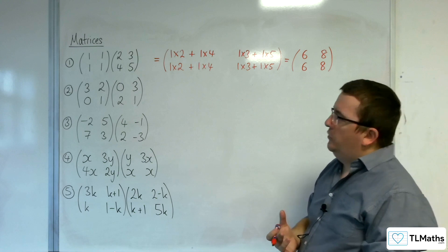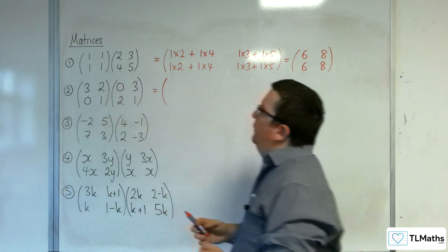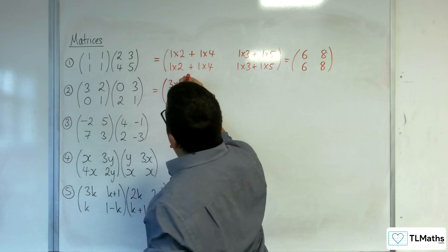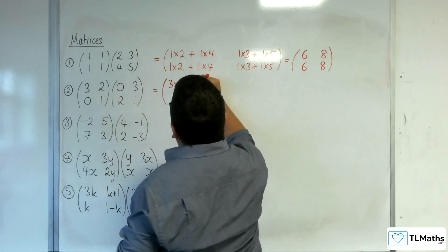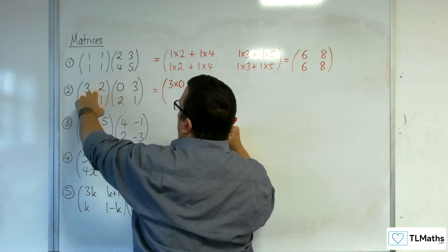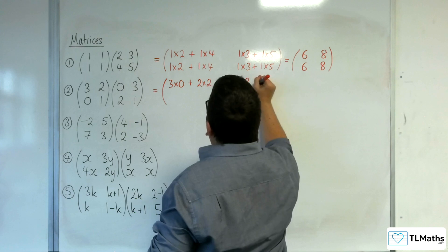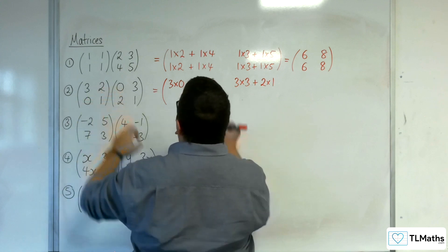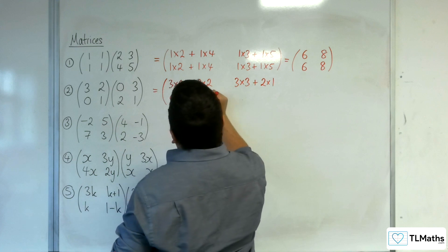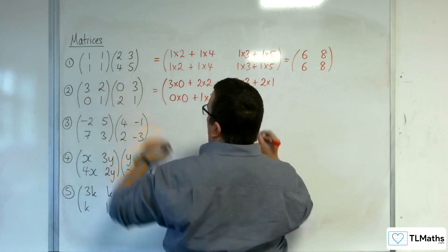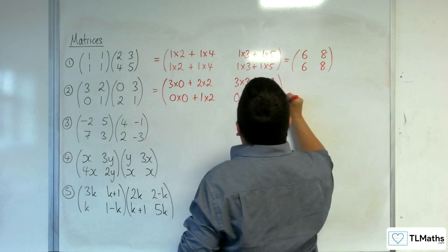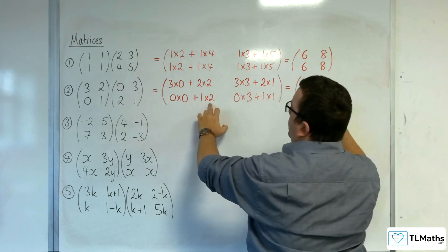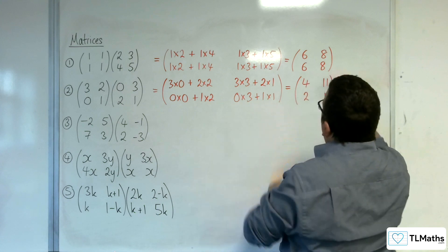Let's have a look at the second one. First of all, you've got the top row multiplying with the first column: 3 times 0 plus 2 times 2. Then you've got the top row multiplying with the second column: 3 times 3 and 2 times 1. Then the bottom row multiplying with the first column: 0 times 0 plus 1 times 2. Then 0 times 3 plus 1 times 1. So we have 4, then 9 plus 2 so 11, then 2, then 1. And so that's my answer.